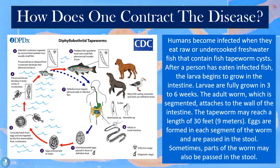The procercoid larvae develop in the body cavities of these crustaceans and are released, developing into plerocercoid larvae. The infected crustaceans are then ingested by the second intermediate host, which are usually small fish. These small fish ingest the parasitic larvae. Subsequently, a larger predator fish — called the paratenic host — eats these small fish, and the plerocercoid larvae invade their tissues. From there, either humans or other fish-eating mammals can ingest these fish and become infected.